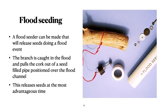In areas where floods are common, a flood seeder can be made that releases seeds during the flood event. In this example, we've got a branch laid down in the channel. When the flood comes, it pulls the log down the stream, and the log pulls the plug out of a seed container, and the seed sifts down into the water and is spread out as the water goes further downfield. This gets seeds out at the most advantageous times.